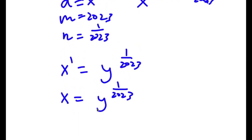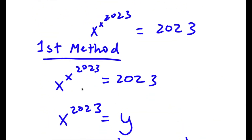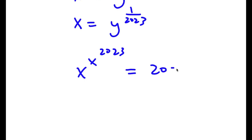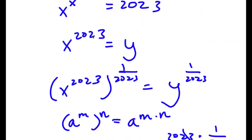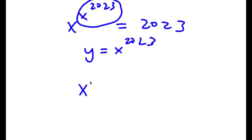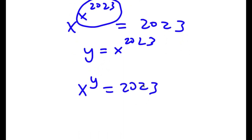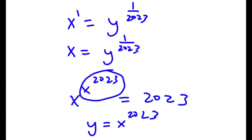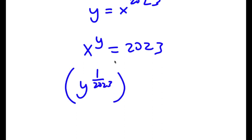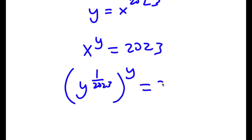Now that we have x, recall our original equation: x to the power of x to the power of 2023 is equal to 2023, and we set y equal to x to the power of 2023. So I can replace x to the power of 2023 with y, giving x to the power of y is equal to 2023. And remember, x is equal to y to the power of 1 over 2023, so I can replace x with y to the power of 1 over 2023, raised to the power of y, which equals 2023.